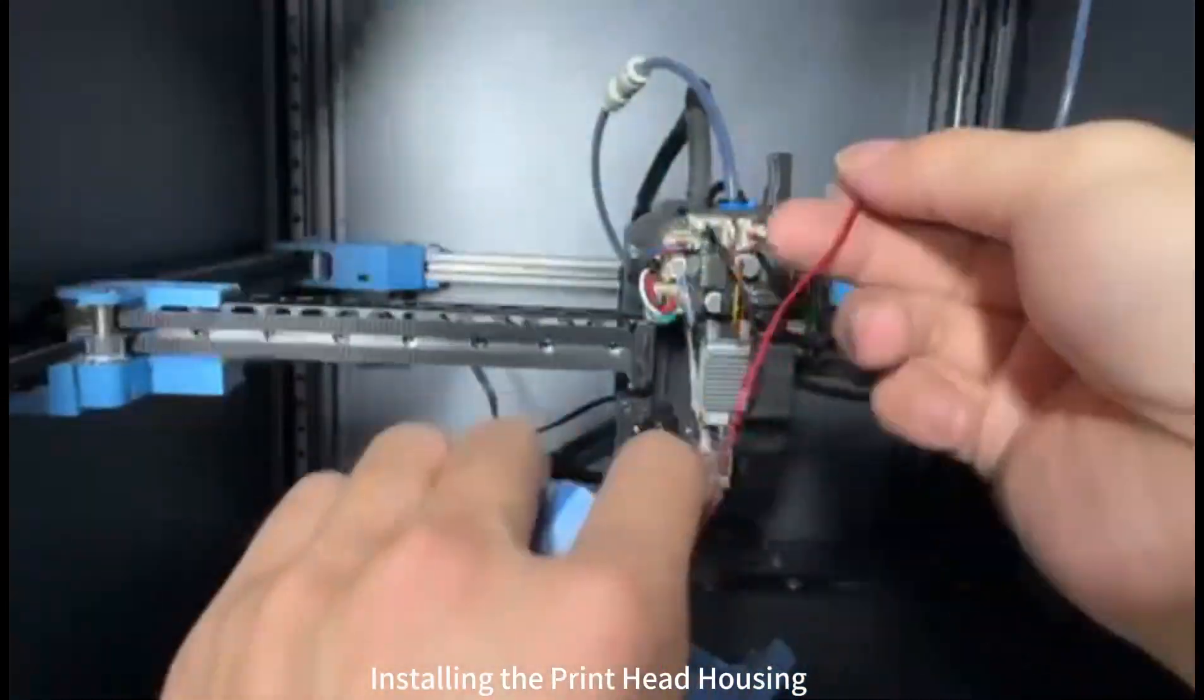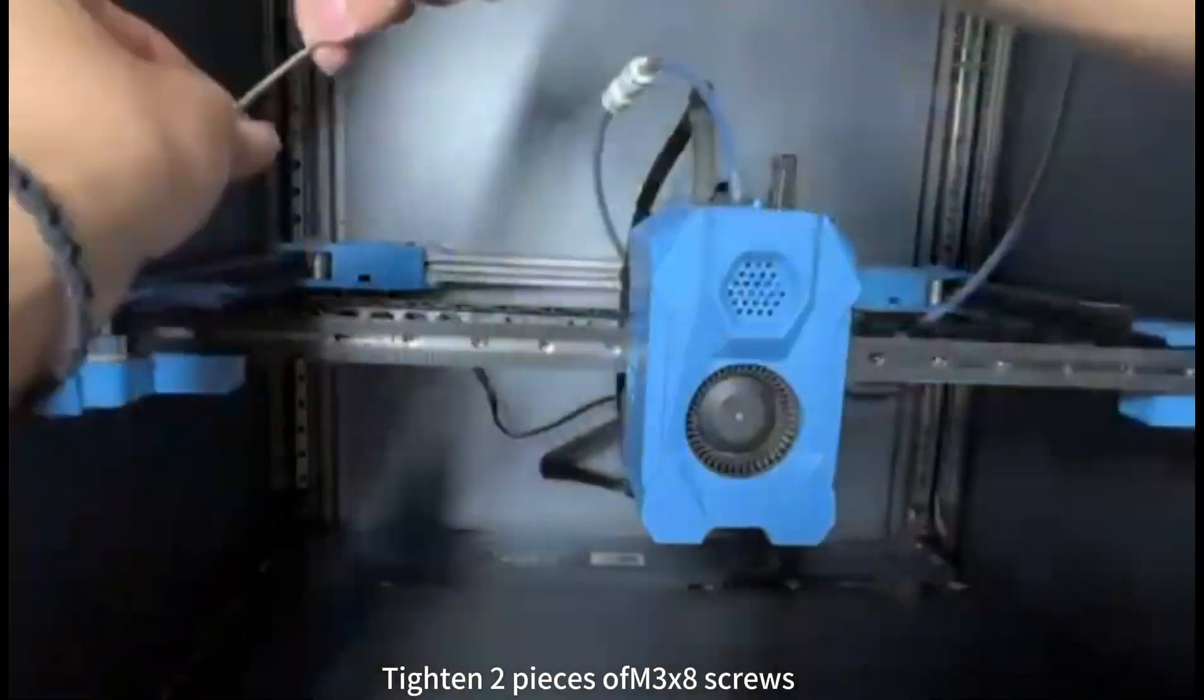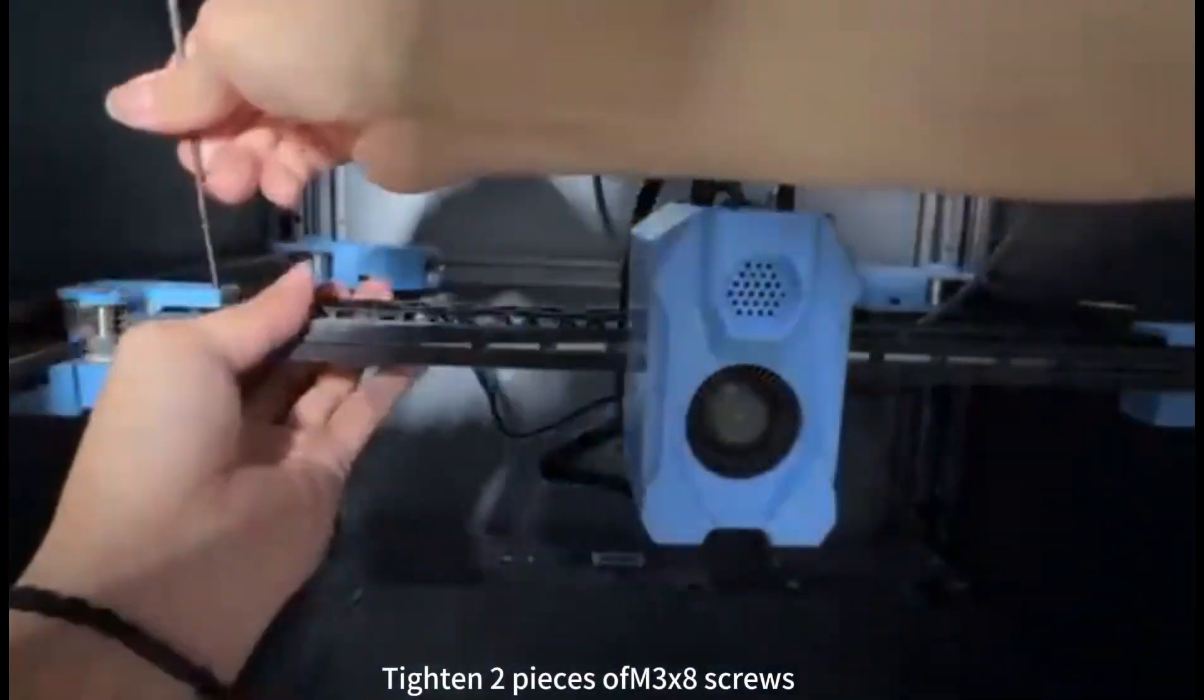Install the print head housing. Tighten two pieces of M3 by 8 screws.